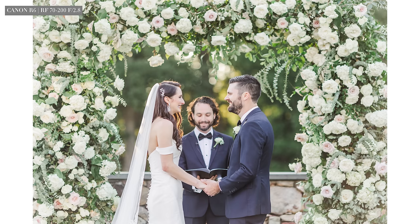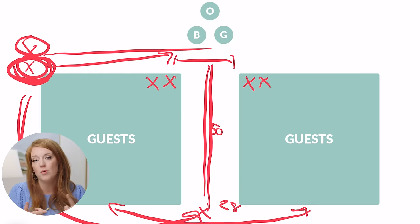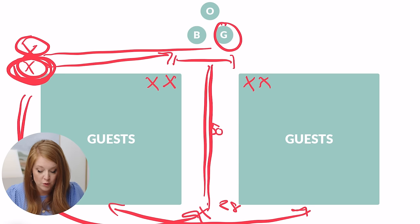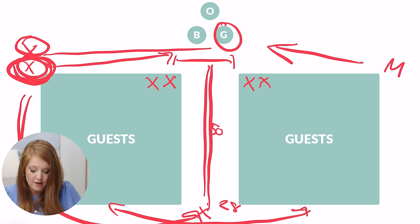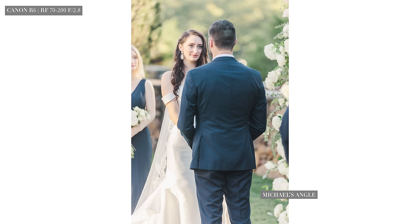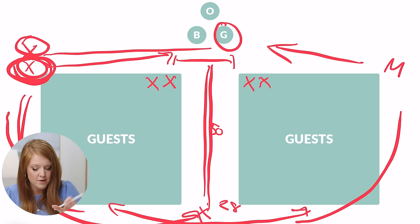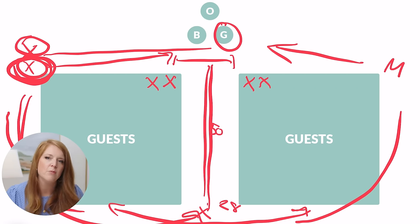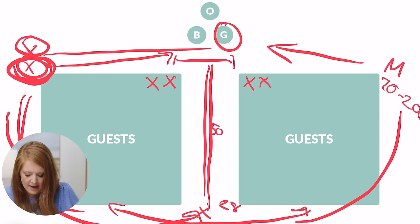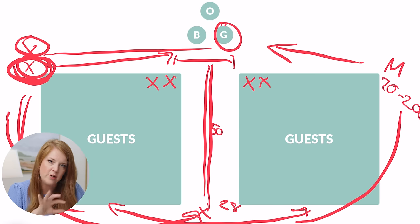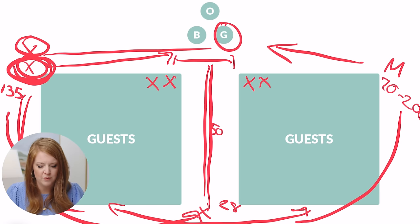I make the decision to go back to the groom's side a second time usually during the vows, because that's when things are most emotional. At the same time, my second shooter Michael is on the bride's side. If I'm shooting solo, I wouldn't go back a second time — I'd go once to get a bride's-side view. With a second shooter, there's no need for me to go to the right if I trust Michael. He's normally there with a 70-200, and I may use the 135 f/2.0 with an adapter on the R6.